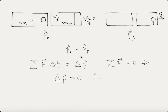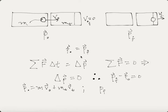From the conservation of momentum, p_f minus p_initial equals zero. Our initial momentum is the mass of the ball times the velocity of the ball, plus the mass of the tube times the velocity of the tube, all in the initial state. In the final state, we have the mass of the ball plus the mass of the tube moving at the same final velocity.